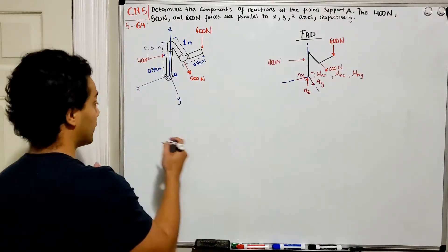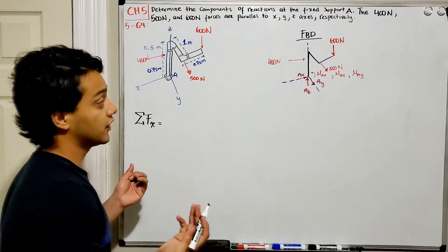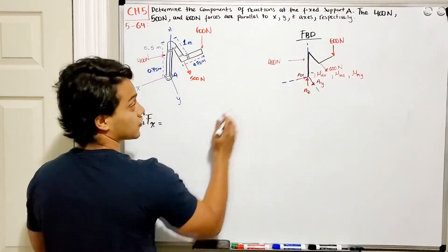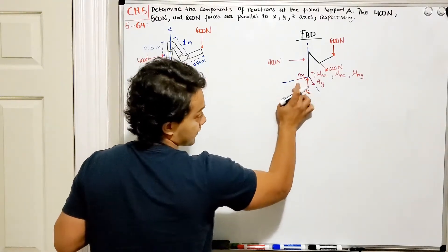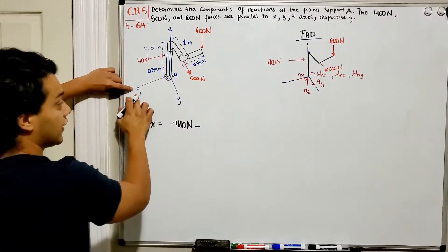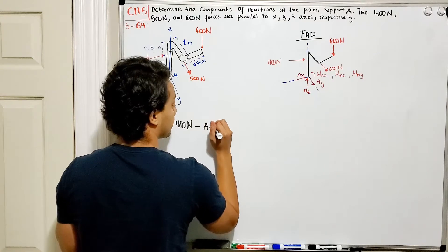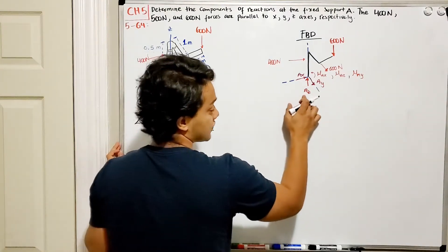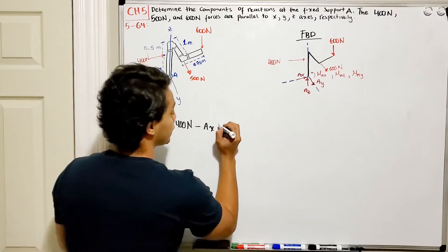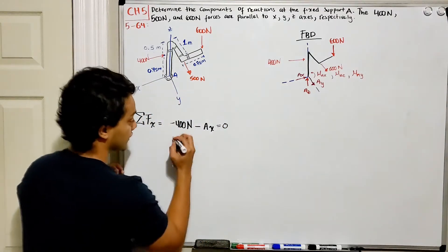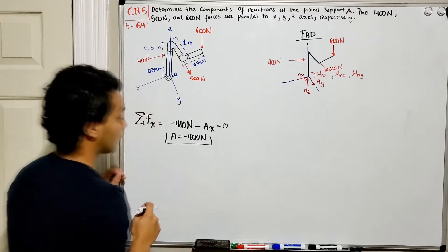Now we do the summation of forces in the X direction. What do I have in the X direction? I have the 400 Newtons acting in the negative X direction, so negative 400 Newtons, minus AX — I drew it negative with respect to the X axis. That's all in the X direction, so this equals zero. Therefore AX equals negative 400 Newtons. The negative sign means we assumed the wrong direction.